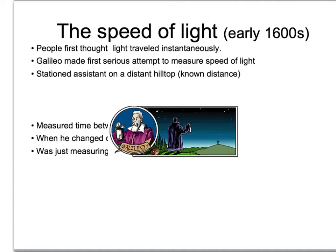He had someone stand on a hilltop a very far distance from him. His friend would open the shutter on a lantern and the light would come out. When Galileo saw the light, he would open the shutter on his lantern, and the friend would measure the time it took between when he opened his shutter and then saw the light from Galileo's lamp.